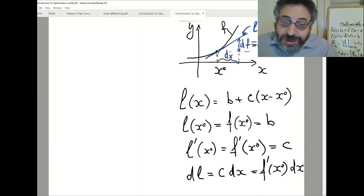And if I want this linear function to be tangent to my original one, to f, I want the value at x0 to be the same. So I want l of x0 equal to f of x0. And l of x0 is b. So b is f of x0.